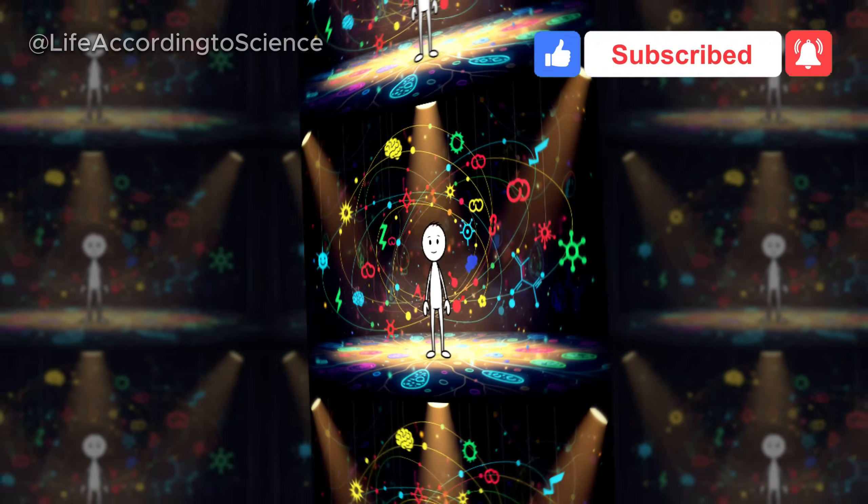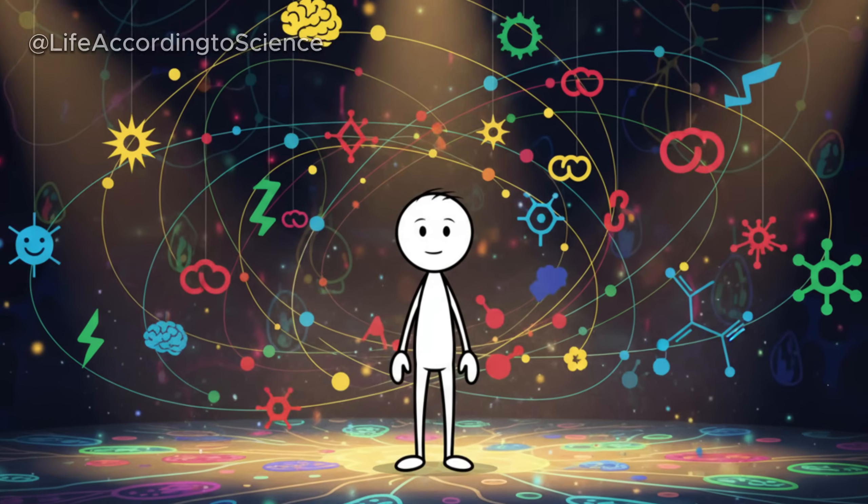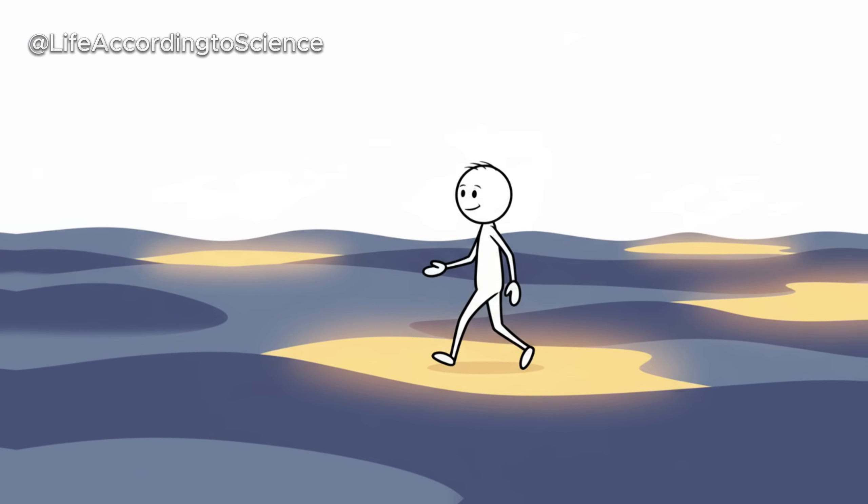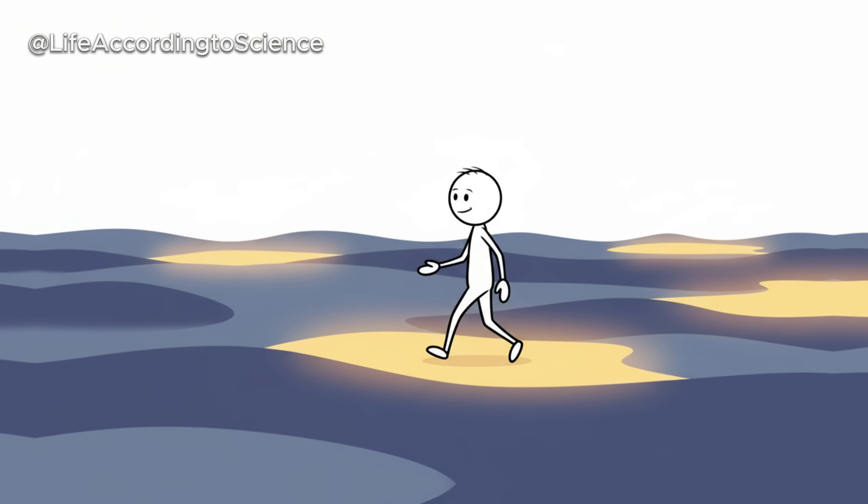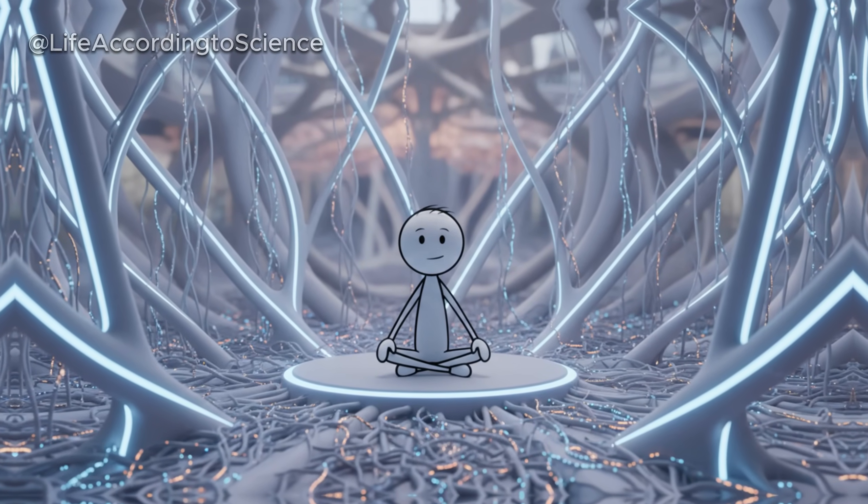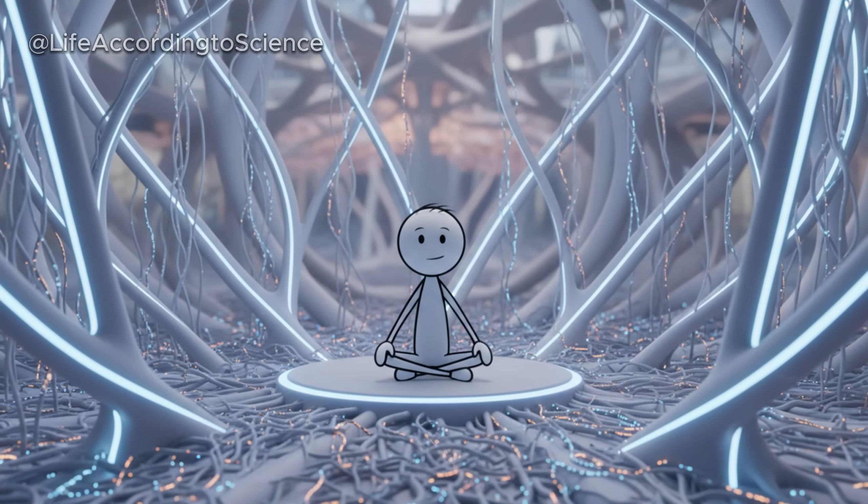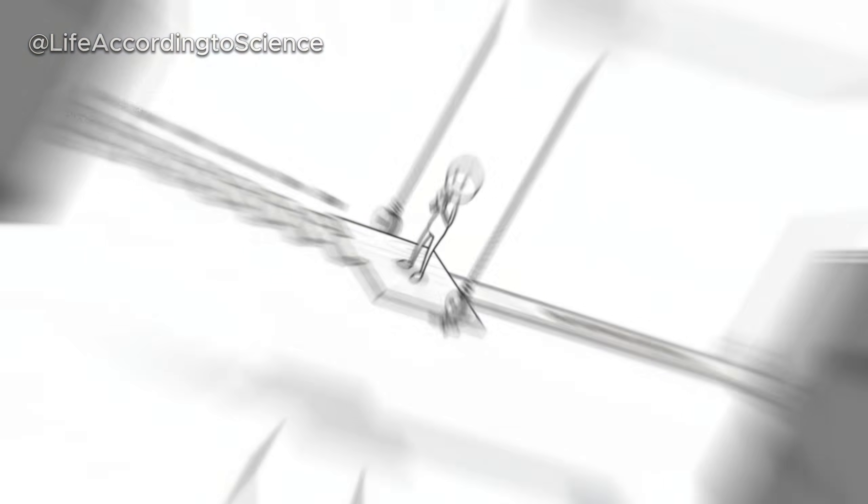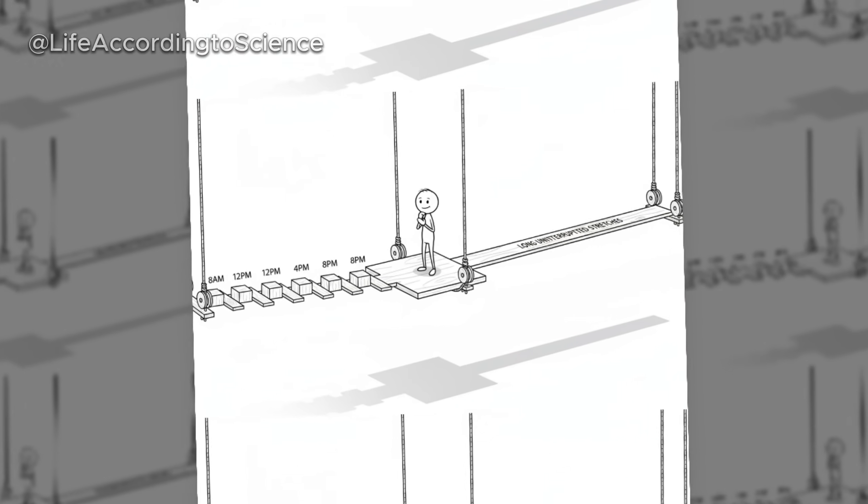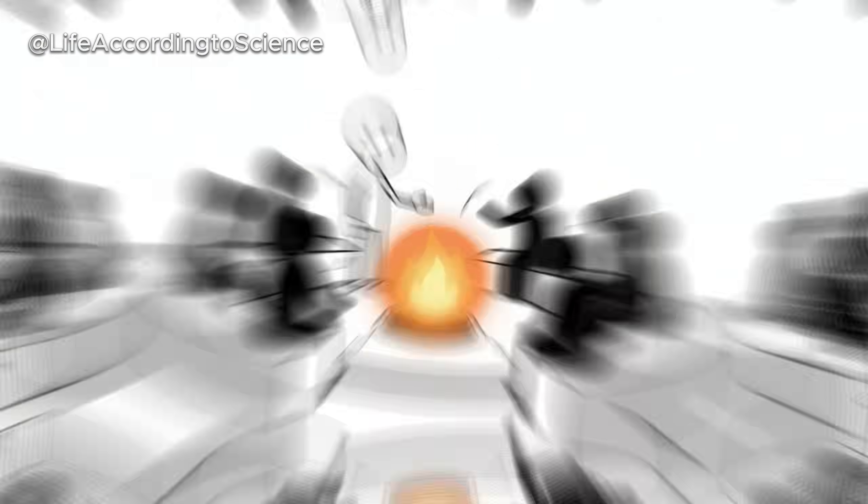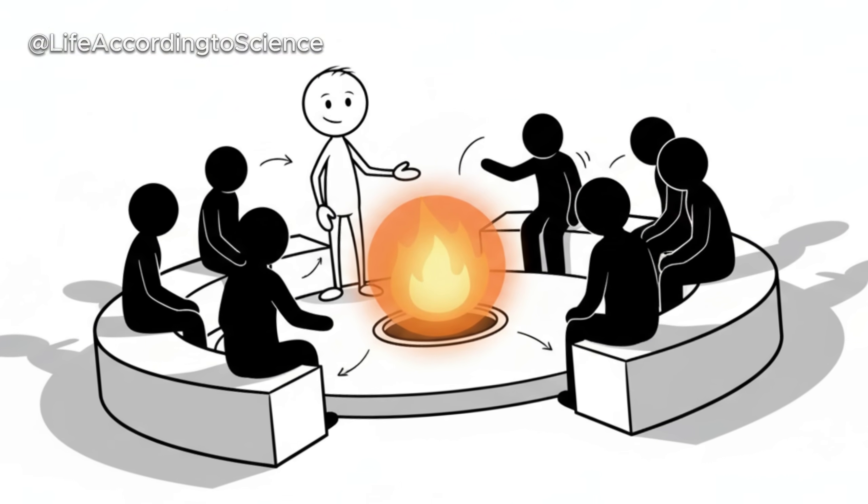You might experience waves of fatigue mixed with strange bursts of energy. That's your body's shifting chemistry at work, adapting in real time. Every system, from your liver to your brain, is renegotiating how to survive the energy crisis. It's at this stage that people often experience the most mental clarity, or conversely, mental fog. The outcome depends entirely on how efficiently your body has made the switch to fat and ketone metabolism. Share your answer in the comments below. It helps others learn from your experience.